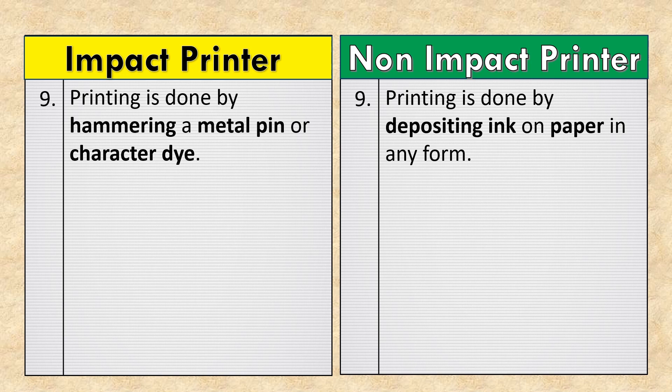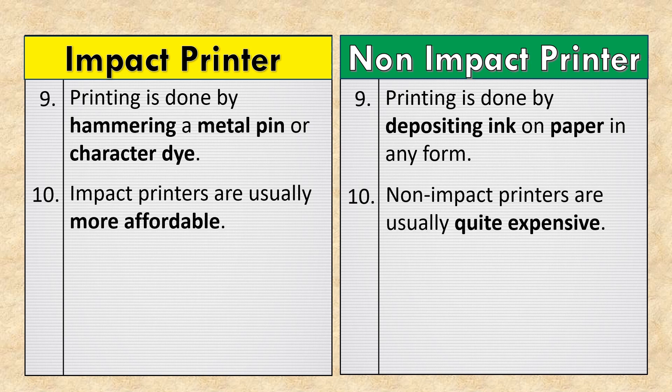In impact printers, printing is done by hammering a metal pin or character die. In non-impact printers, printing is done by depositing ink on paper in any form. Impact printers are usually more affordable, while non-impact printers are usually quite expensive.